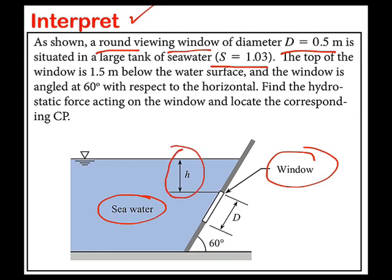This distance is 1.5 meters and the window is angled at 60 degrees as shown. The goals are the hydrostatic force, so the load on the window, and the location of the center of pressure.